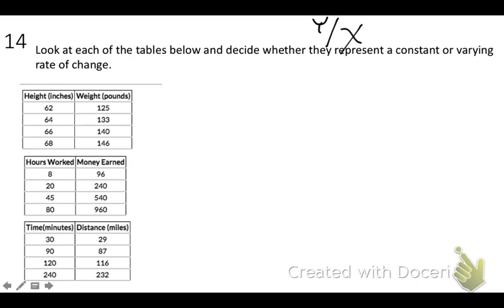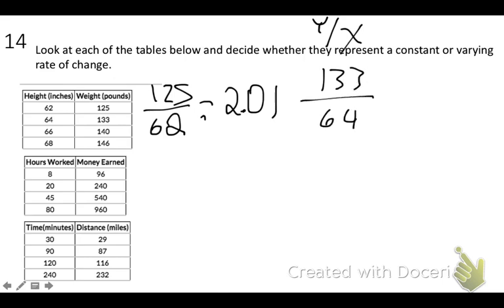So if I start dividing, and I'm going to not do too much of this because you can probably do it with a calculator, but all you need to do is start dividing 125 divided by 62. And you're going to get 2.01, I think. And then you're going to do it again. You're going to do 133, you get like 2.016, blah blah blah. And then you're going to do 133 divided by 64, and you get 2.07.